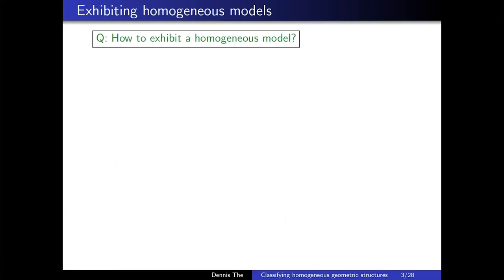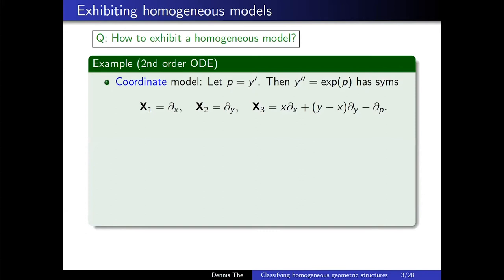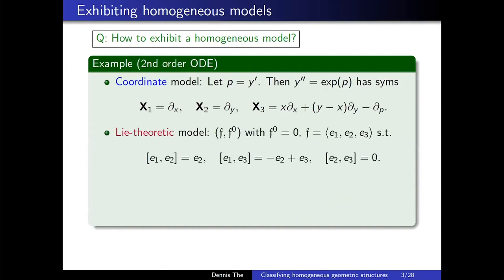Before getting into details about parabolic geometries, let me phrase a motivating question: how do you exhibit a homogeneous model? Case in point: second order ODEs. One natural way is a coordinate model. Take the second order ODE y'' = exp(y'), using the variable p = y'. It has symmetries exhibited as vector fields written in the coordinate system x, y, p. Another perspective is the Lie theoretic perspective — you look at the abstract Lie algebra structure formed by taking commutators of these vector fields.